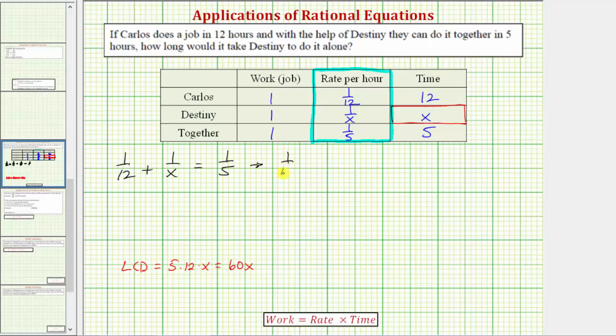So we'll have one-twelfth times 60x plus one over x times 60x must equal one-fifth times 60x. And if it's helpful, we can write 60x as a fraction with the denominator of one. And now we'll find the products, but before multiplying we'll simplify. We'll simplify out any common factors between the numerators and denominators. Notice twelve and sixty share a common factor of twelve. There's one twelve in twelve and five twelfths in sixty.